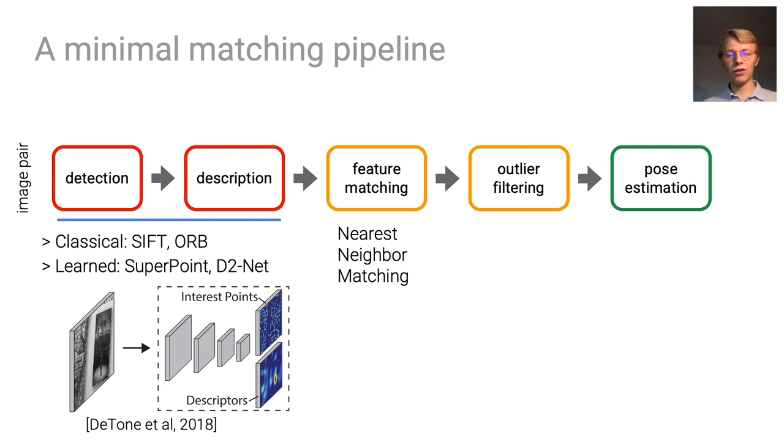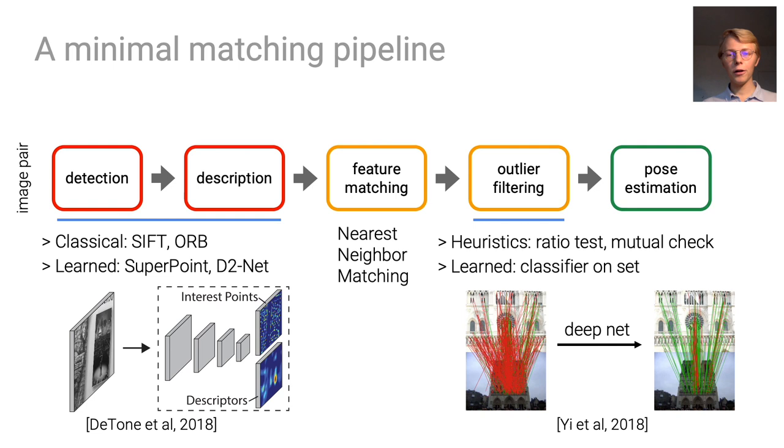Incorrect matches are then filtered with heuristics like the ratio test, or recently with deep network classifiers that operate on sets. Finally, a relative pose is computed by a robust estimator like RANSAC.